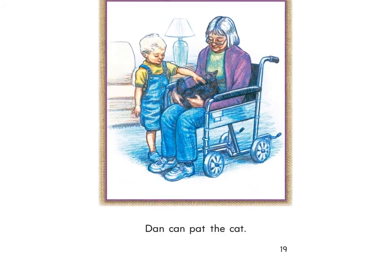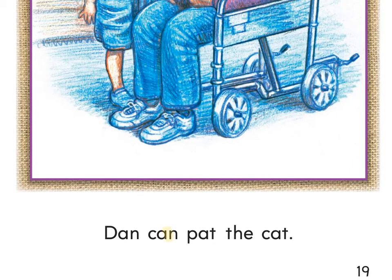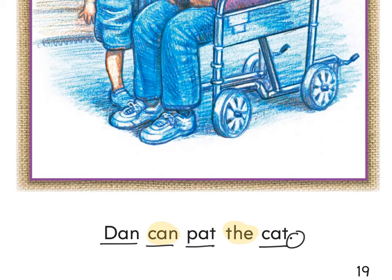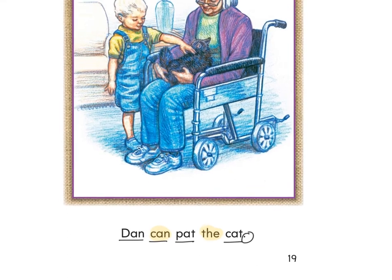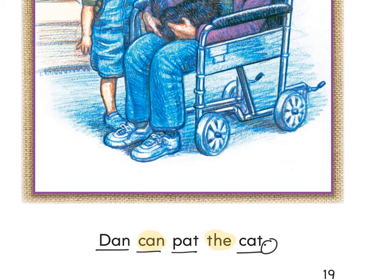Look at the next page. At the bottom we need to highlight. I see two words: can, and 'the.' Very good, and a period. There is a period at the end. Let's underline our short A words. Dan, can, pat — do I need to underline 'the'? No. Cat. Circle your punctuation — the punctuation at the end of that sentence is a period. So now who is patting the cat? Dan is. Pencils down, fingers ready. Ready — Dan can pat the cat.